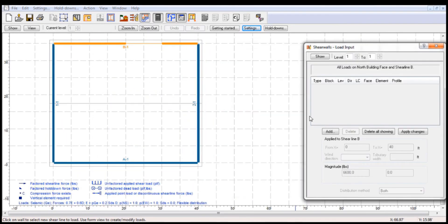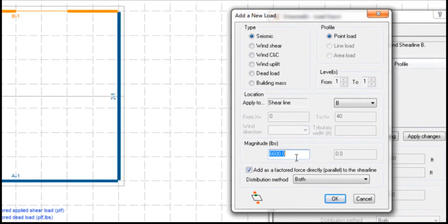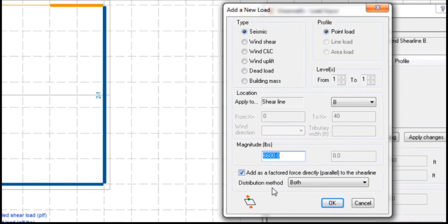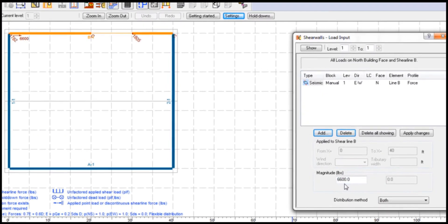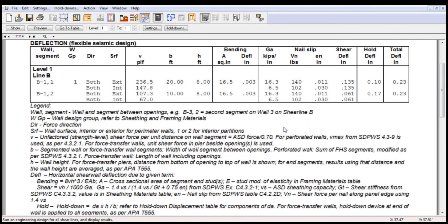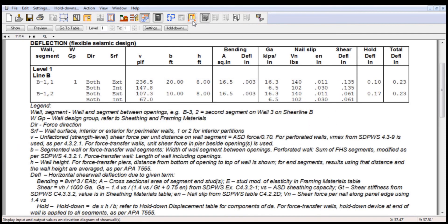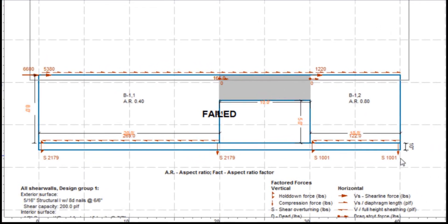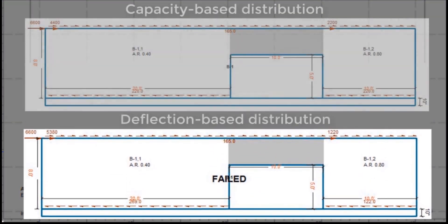Once we apply a point load of 6,600 pounds on wall line B1, which has an opening of 10 feet with a 20 feet offset from the edge, we can run the design. By returning to the elevation view, we can see the influence of each type of distribution on the shear line, just like in the example showed in the beginning of this video. Again, this comparison demonstrates that in some cases, one type of distribution will generate a failure while the other will not.